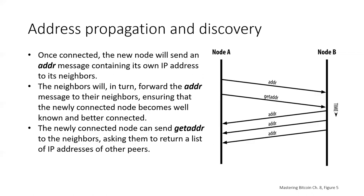A node must connect to a few different peers in order to establish diverse paths into the Bitcoin network. Paths are not persistent — nodes come and go — so the node must continue to discover new nodes as it loses old connections. Only one connection is needed to bootstrap because the first node can offer introductions to its peer nodes, and those peers can offer further introductions. It's also a waste of network resources to connect to more than a handful of nodes; you don't need to know about all 5,000 to 10,000 nodes in the Bitcoin network, just a few nearby nodes.